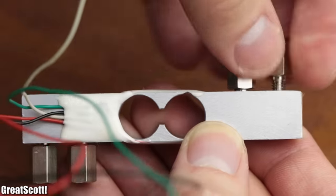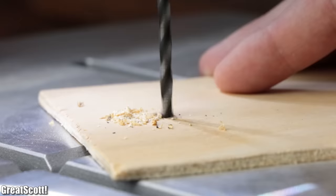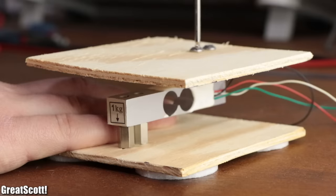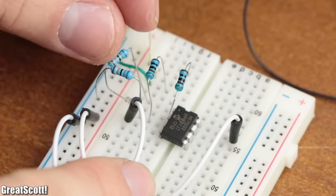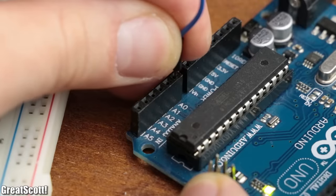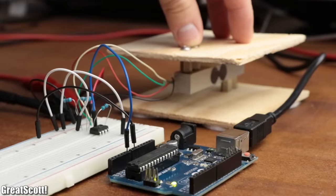That means we could simply attach the load cell to two pieces of wood with M4 spacers and screws, build up the same amplifier circuit as before, feed it into an Arduino, and use the setup as a crude scale.